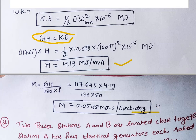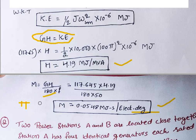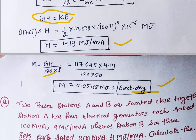If you want M in electrical radians, then instead of 180 in the denominator you need to use π × F. So finally M equals 0.0548 megajoules per second per electrical degree. If you want it in radians, use π instead of 180. The first question is now over.